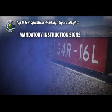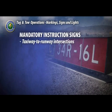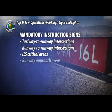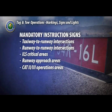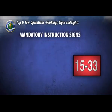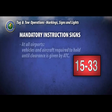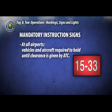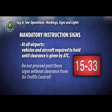Mandatory instruction signs are used to denote taxiway-to-runway intersections, runway-to-runway intersections, ILS critical areas, runway approach areas, CAT-2 and CAT-3 operation areas, military landing zones, and no entry areas. These signs have white inscriptions on a red background outlined in black. At all airports, vehicles and aircraft are required to hold at these signs until clearance is given by air traffic control. It is critical that you do not proceed past these signs without clearance.